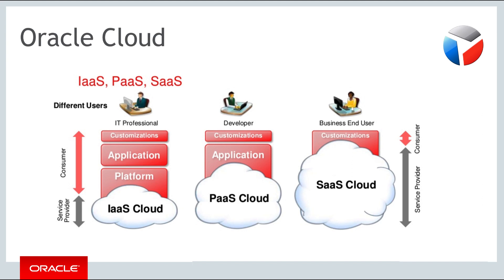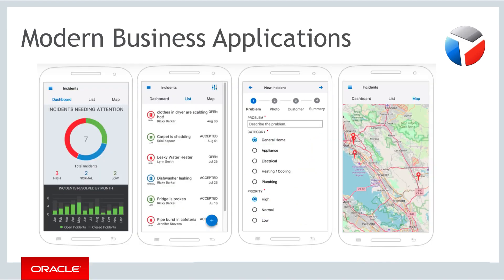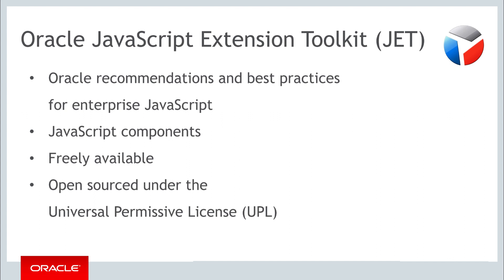Applications can be developed to interact with data provided by Oracle Services in a number of different ways. Customers need to be able to access those applications on all the devices that have become popular over the past years, from desktops and laptops to tablets and mobile phones. Since the browser is available on all these modern devices, and since JavaScript is the native language of the browser, doing research on the different ways that JavaScript can be used to interact with Oracle Cloud Services makes a lot of sense — and JET is the result of that research. You can see JET as being Oracle's recommendations and best practices for working with JavaScript in enterprise applications. JET combines these best practices together with a set of JavaScript components and design patterns, and is freely available, open sourced under the Universal Permissive License.